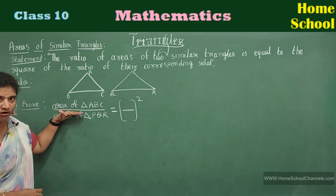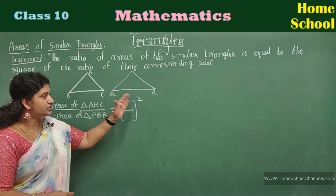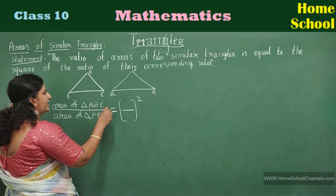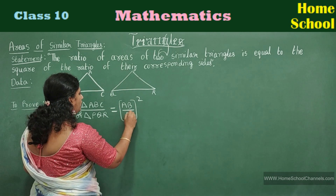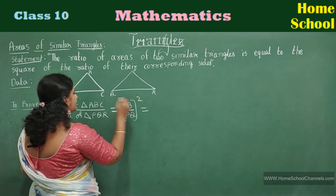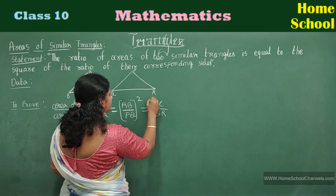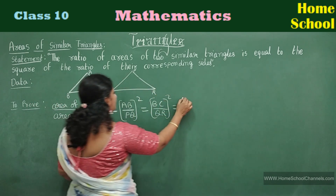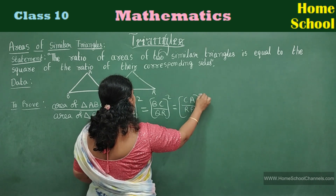The ratio of areas of two similar triangles is equal to the square of the ratio of their corresponding sides. Which side are you going to take? AB is corresponding to PQ — so AB by PQ whole square. Or you can write any other side: BC is corresponding to QR, and CA is corresponding to RP, CA by RP whole square.